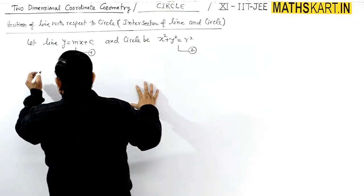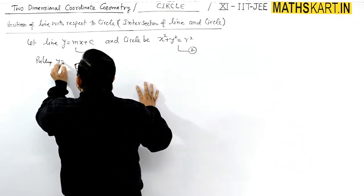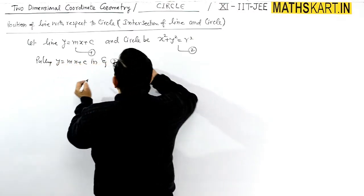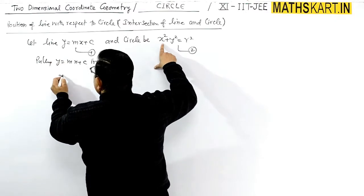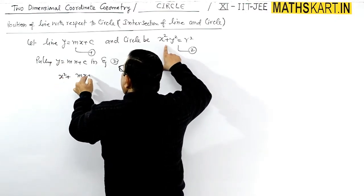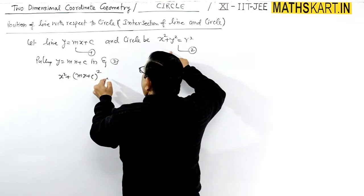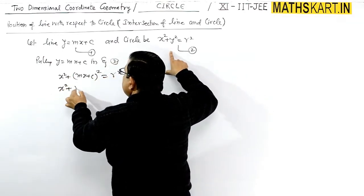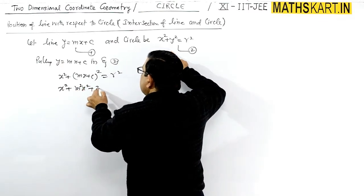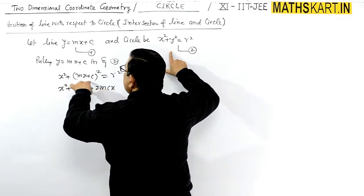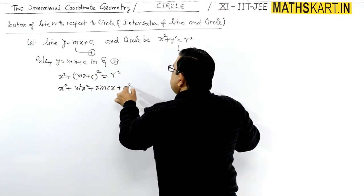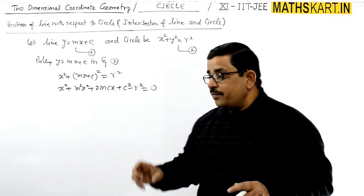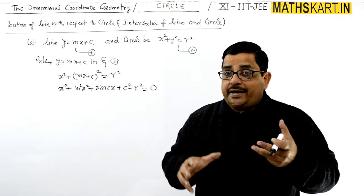Putting y = mx + c into the circle equation, the y value gives x² + (mx + c)² = r². Opening this out: x² + m²x² + 2mcx + c² − r² = 0. Now this equation is a quadratic in x.